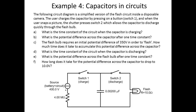Here's an example of capacitors in a circuit. The following circuit diagram is a simplified version of the flash circuit inside a disposable camera. The user charges the capacitor by pressing on a button, switch one, and when the user snaps a picture, the shutter presses switch two, which allows the capacitor to discharge quickly through the flash bulb.